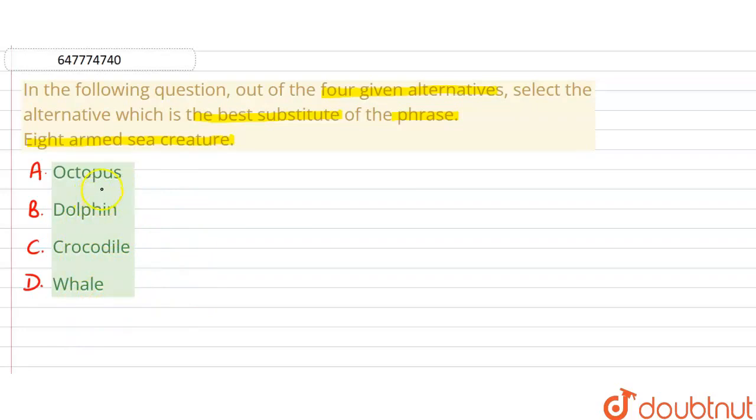So, let's look at the options. The first option is our correct answer. That is Octopus. Octopus is an eight-armed sea creature, which has eight arms. So we can say option A is the correct answer to the given question.